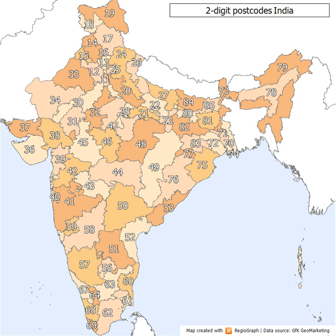The last two digits represent the delivery office within the sorting district, starting from 01, which would be the GPO or HO. The numbering of the delivery office is done chronologically, with higher numbers assigned to newer delivery offices. If the volume of mail handled at a delivery office is too large, a new delivery office is created and the next available PIN is assigned. Thus, two delivery offices situated next to each other will only have the first four digits in common.